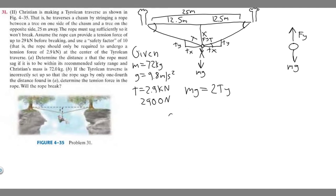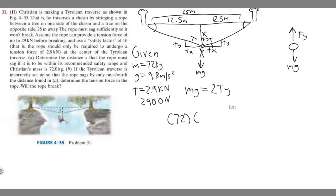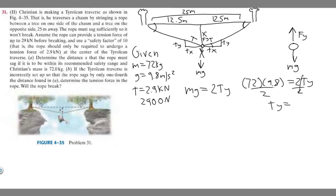We know m is 72 kilograms and g is 9.8, so 72 times 9.8 equals 2·T sub y. Divide both sides by 2 — T sub y equals 352.8 newtons. We also know T, the total tension, is 2,900 newtons. Now that we have T sub y, we can solve for the angle.